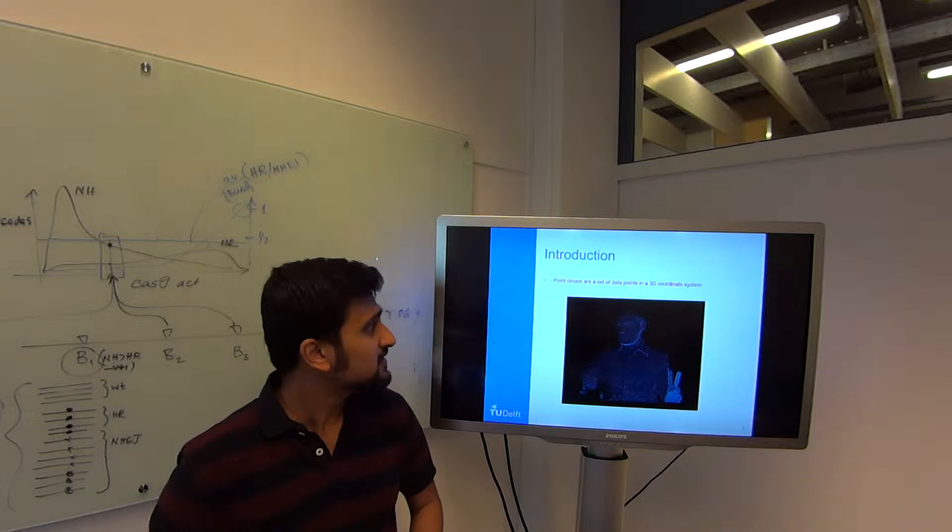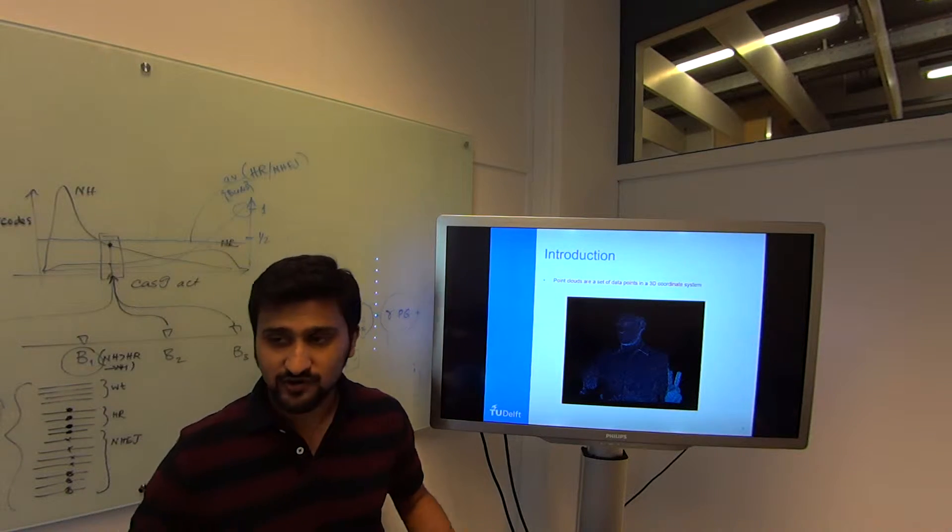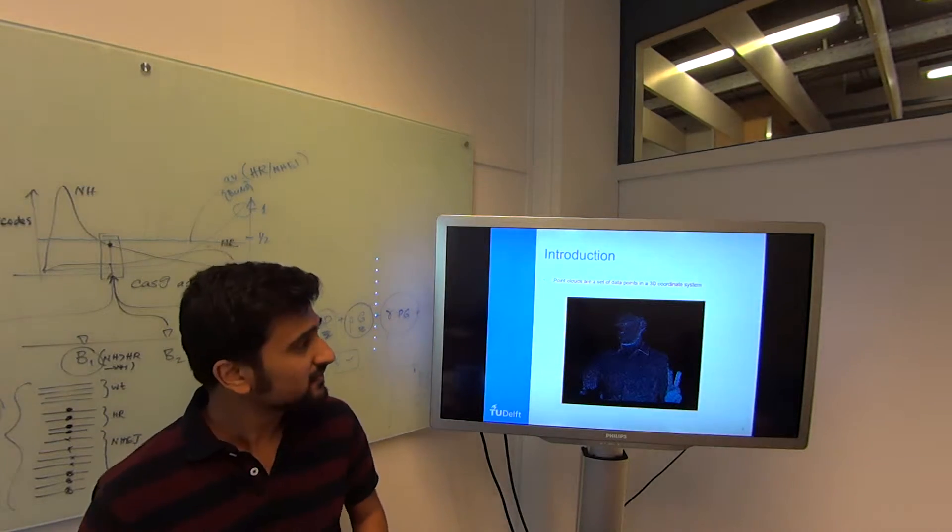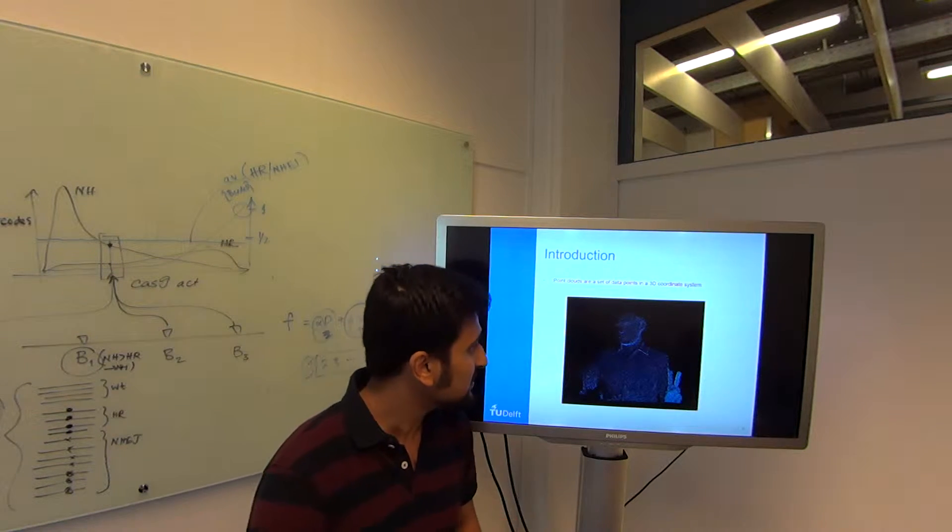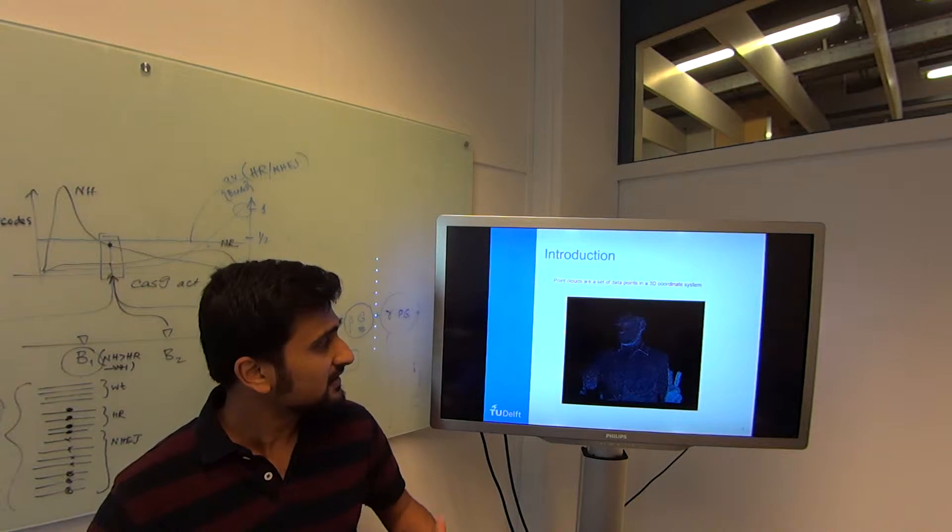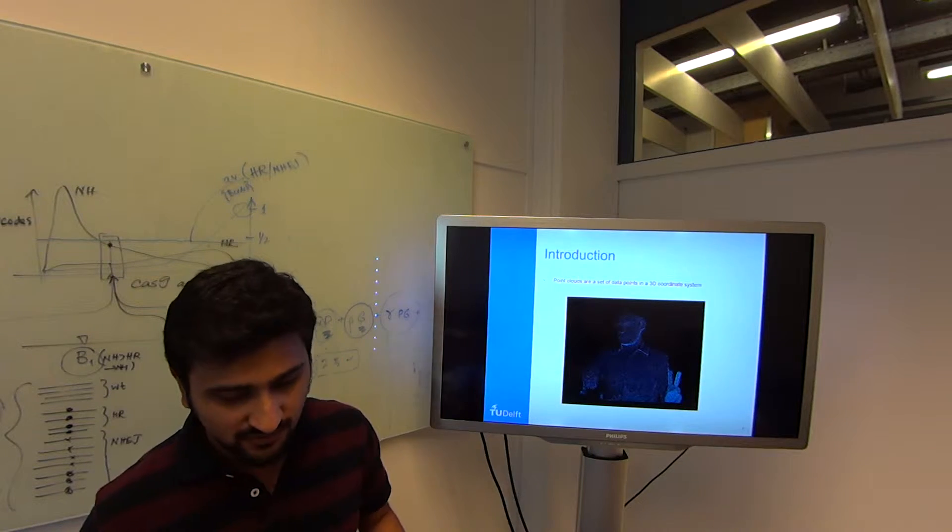Wikipedia defines point clouds as a set of points in a 3D coordinate system. Basically these are captured through sensors and it's a good way to render 3D objects.